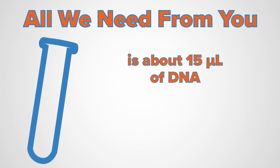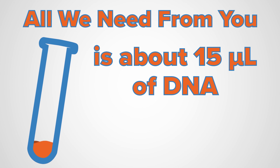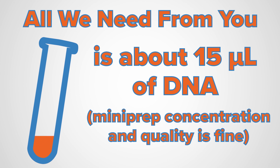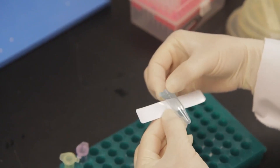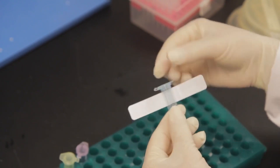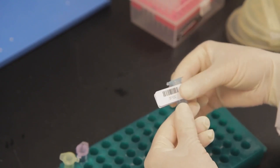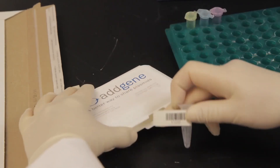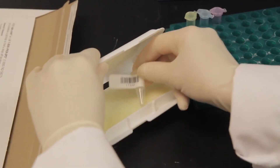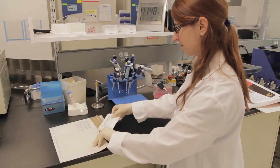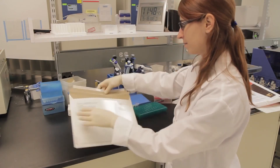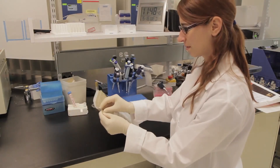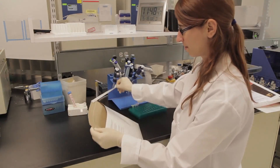All we need from you is about 15 microliters of DNA. Mini prep concentration and quality is fine. Simply attach the barcode sticker to the tube, place it in the plastic box, and use the envelope to ship the samples to Addgene, free of charge.